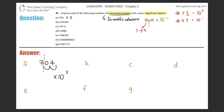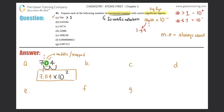Now, do we include the zero in 704? There are technically three types of zeros. This zero is right in the middle between two non-zeros — a middle zero, or trapped zero. Middle zeros always count when doing significant figures. Since this zero counts, I must include it in the scientific notation. So the final answer for A is 7.04 times 10 to the second.